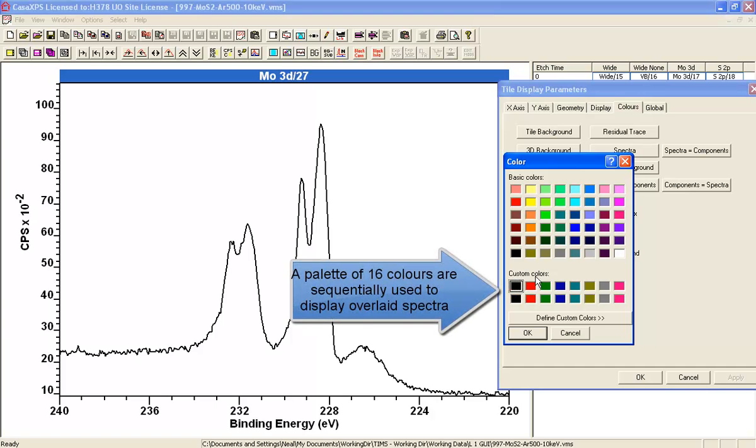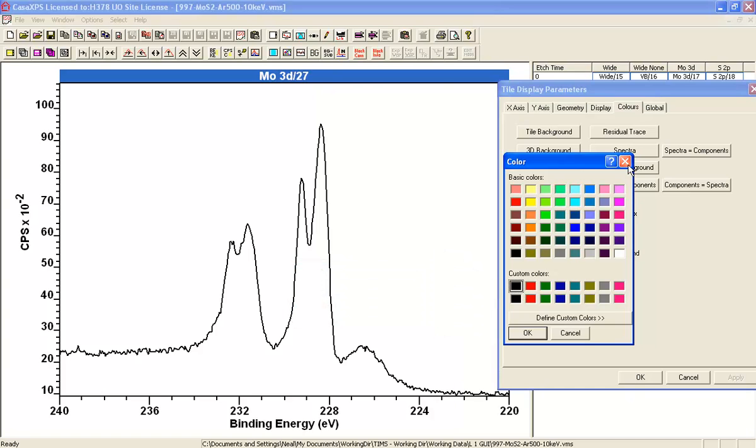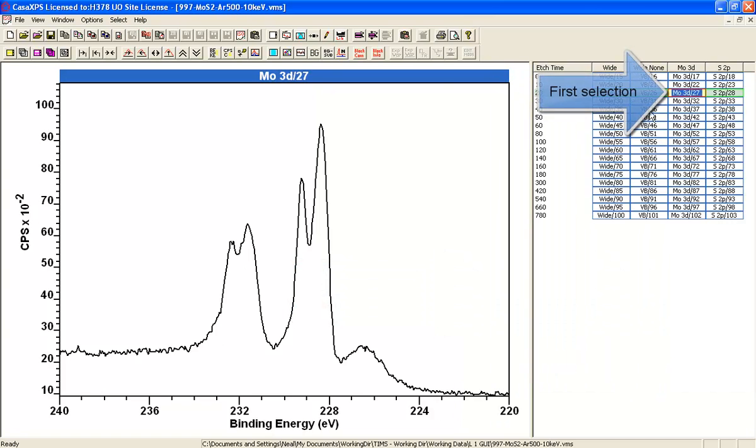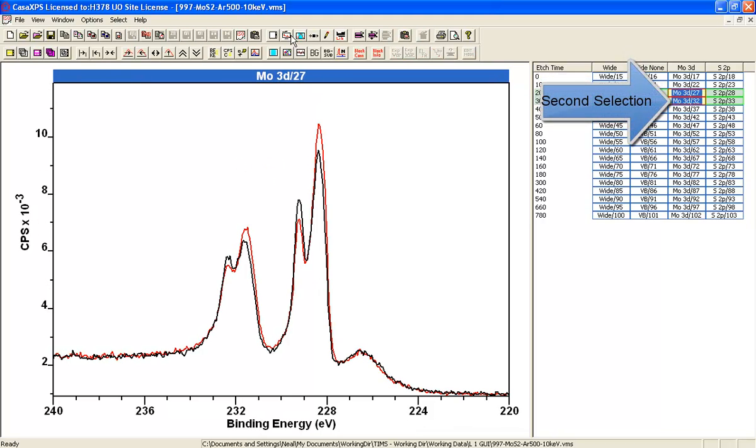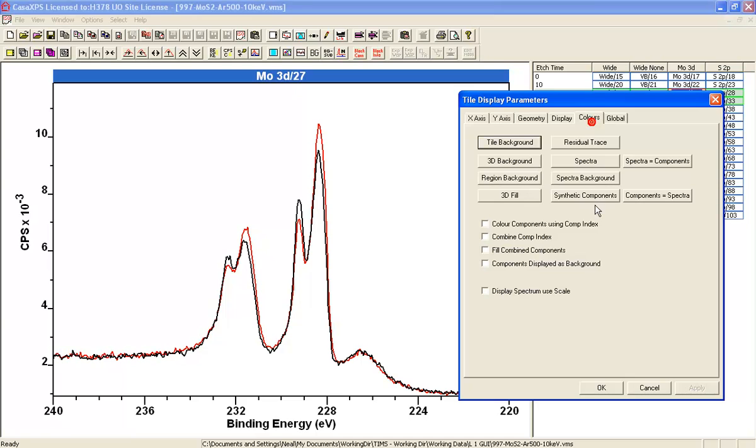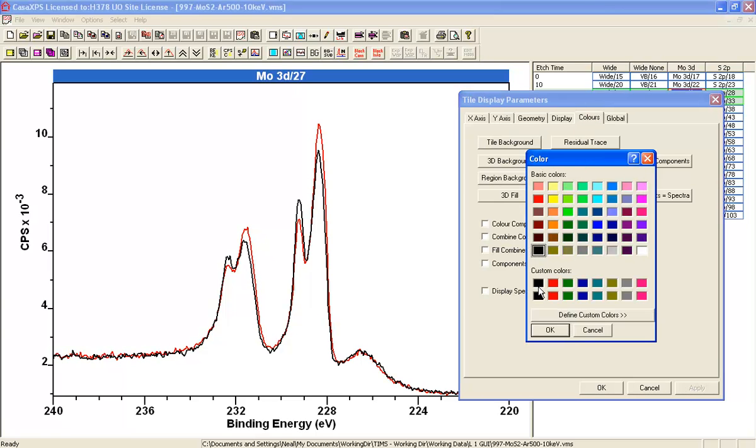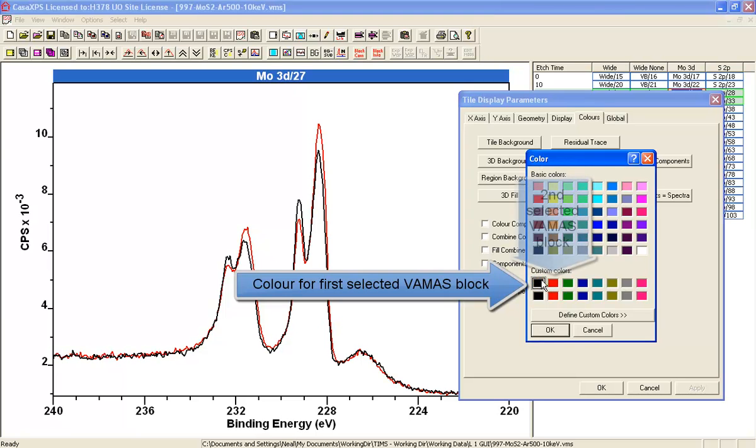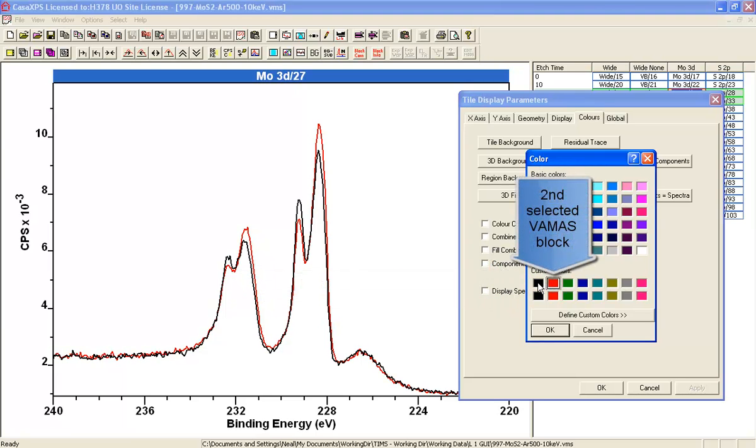If you had two spectra overlaid in the active tile, you can see in the dialog window that the two colors come from this color for the first one selected, and then the second one is the red color.